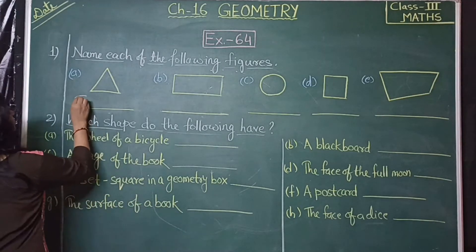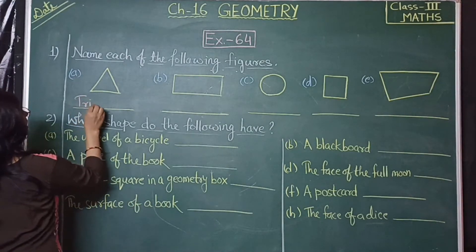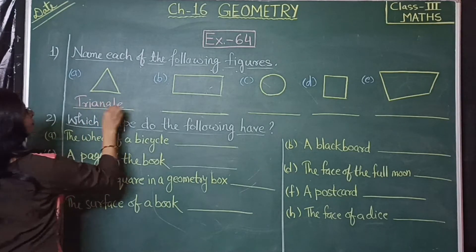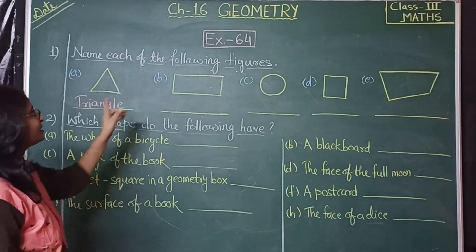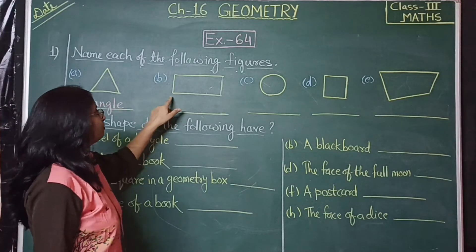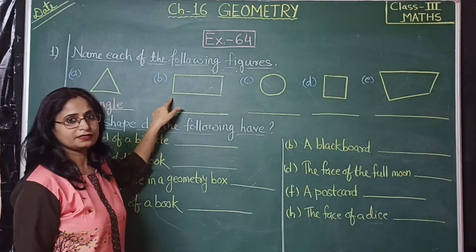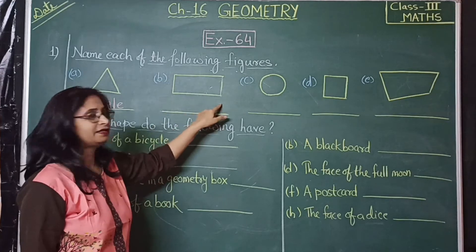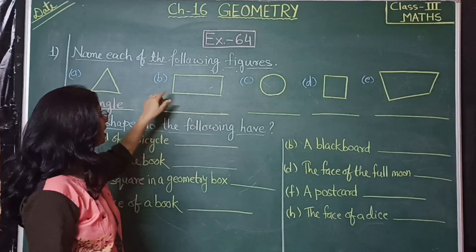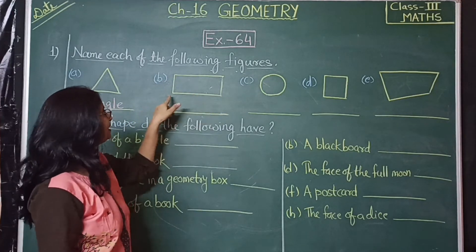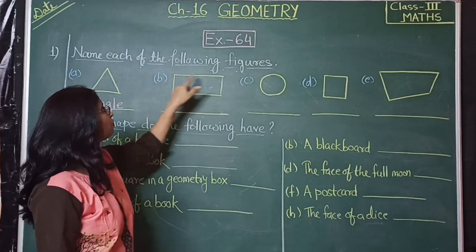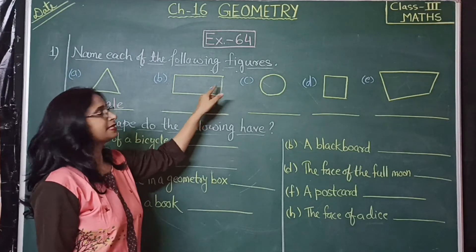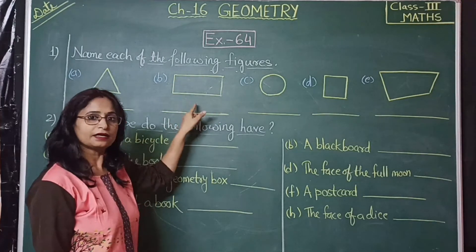The spelling of triangle is T-R-I-A-N-G-L-E. Triangle. Now the next figure — which figure is this? Yes, it is a rectangle. A rectangle has four sides and four corners, and its opposite sides are equal.